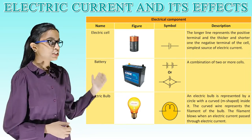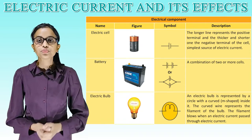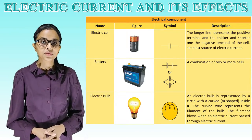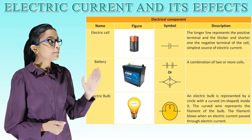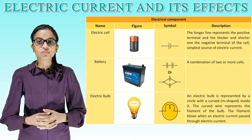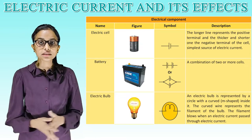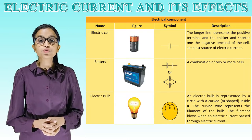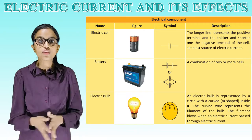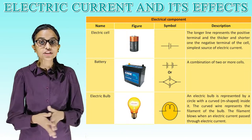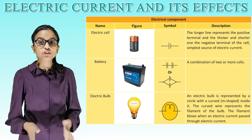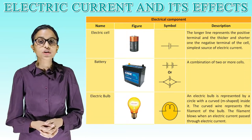Battery — here is its picture and symbol. A battery is a combination of two or more cells. Electric bulb — here is its picture and symbol. An electric bulb is represented by a circle with a curved M-shaped filament inside it. The curved wire represents the filament of the bulb, which glows when an electric current passes through it.